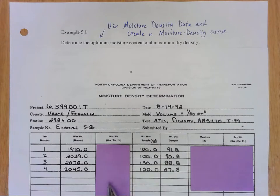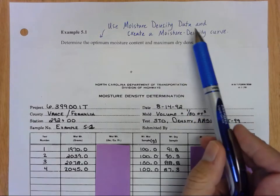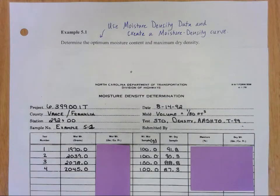I've covered up the values that are already filled in because this is what you're going to be receiving, something like this, and you're going to need to fill in these other columns. So we'll go over how to do that. And you're also going to need to create a moisture density curve for the optimum moisture content and the maximum dry density.